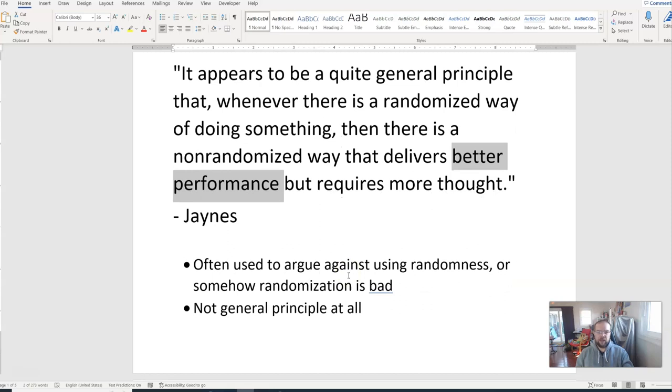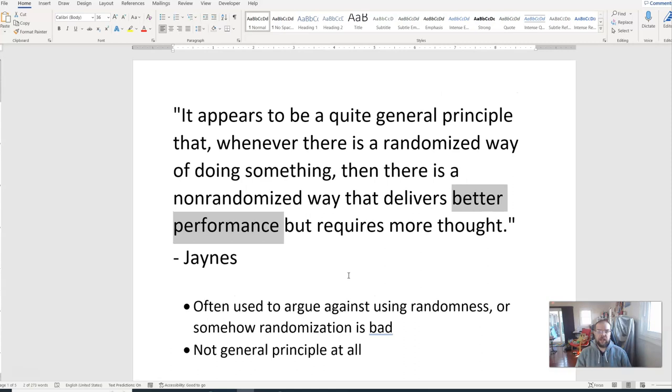But the better performance, I think, is maybe more problematic because it's undefined here. What are we talking about better performance? For example, if I'm doing surveys and experimental design, better performance. Are we talking the estimates are better, the algorithm runs faster, we get done with the project earlier, it's less costly, it's easier to explain, it has better lower bias? So what are we talking about when we say better performance? It's very vague here. And just to say all the time the non-randomized way is better performance in every way? No. No, that's not accurate.